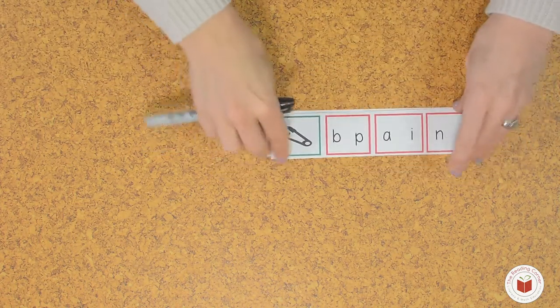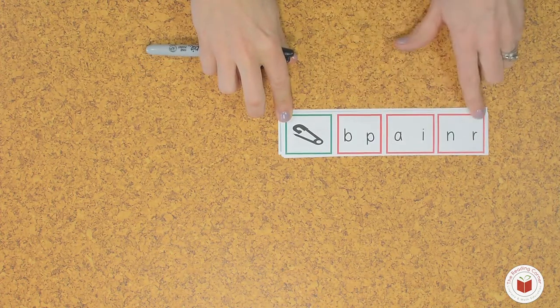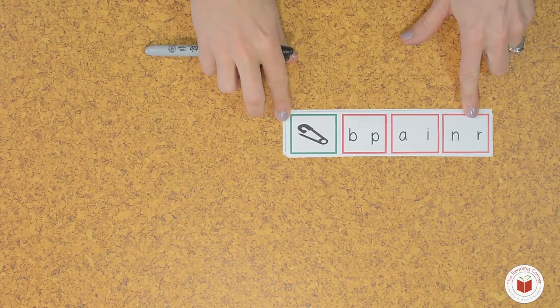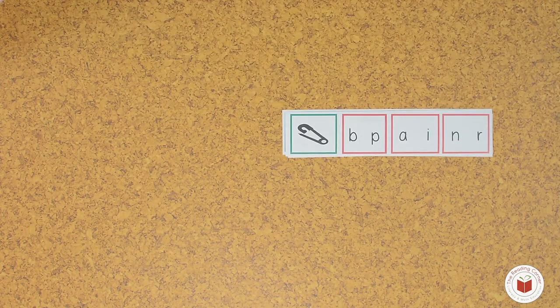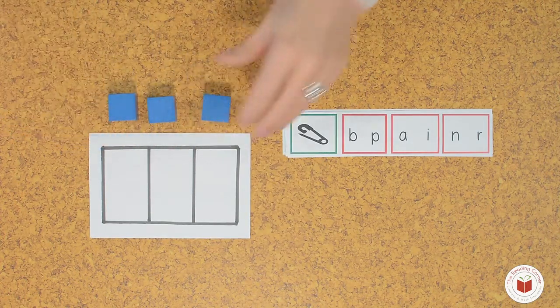So we would have our object, our CVC object, and then we have letters and you have to circle one letter in each box to represent the object. I always try to make sure we have our sound box or our Elkonin box as well.